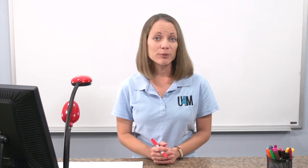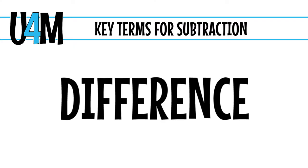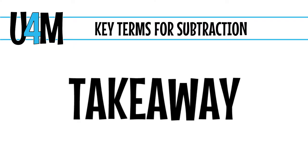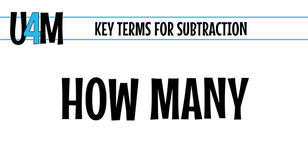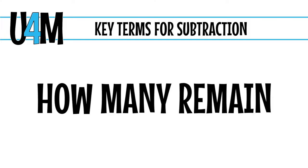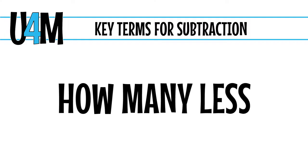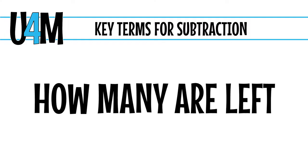Our next operation is subtraction. When we're looking at subtraction problems we'll see keywords like difference, minus, take away, and then a special group with 'how many': how many are not, how many fewer, how many remain, how many more or how many less, and also how many are left over. So when you see 'how many' in a problem you really want to take a look at what it's defining in that question.